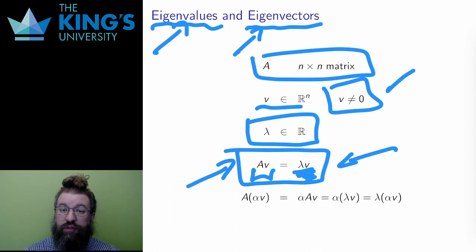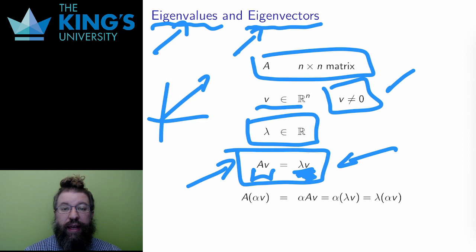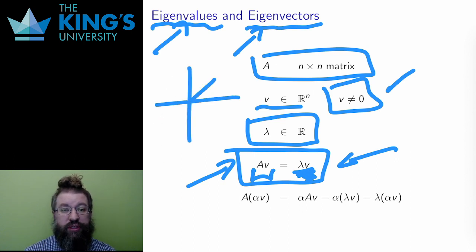If lambda is a positive number smaller than 1, then A shrinks V to a shorter vector. Lambda is again the factor of change in length. If lambda is negative, then V is flipped to the opposite direction, possibly also with a stretch or with a shrink, depending on the size of lambda.